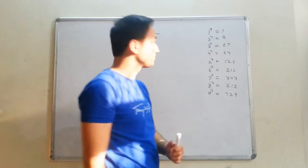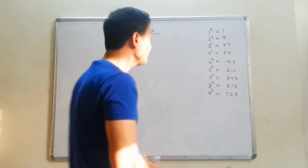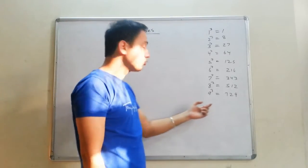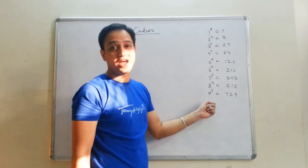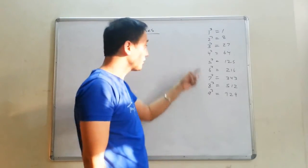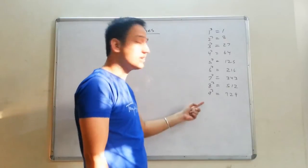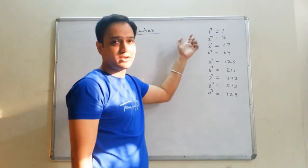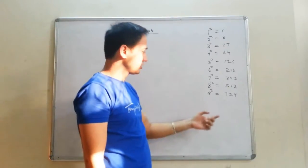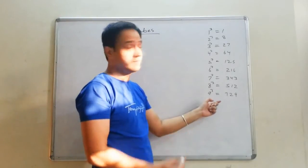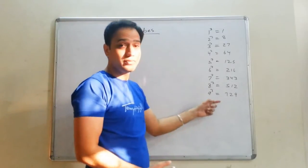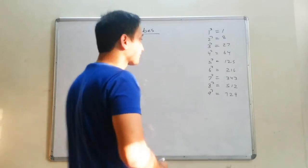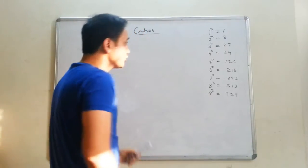I'm going to do cubes. To solve cubes, you have to remember cubes till 9. There is no shortcut to that — you have to remember till 9. Some of you might already know cubes till 9; if you don't, then do remember cubes till 9. Let's start.